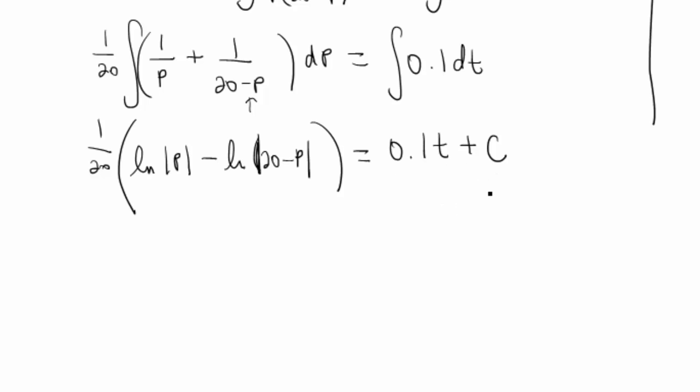Now if we were given an initial condition, now might be a good time to find it. Later might be a good time to find it. These are all going to be really ugly, just for the record. But we don't have an initial condition with this problem, so we're just going to keep on rolling.